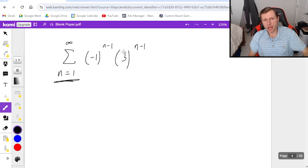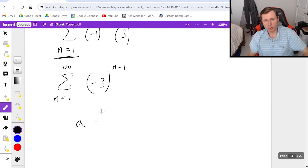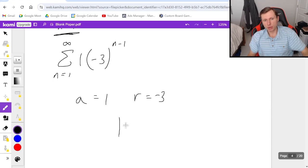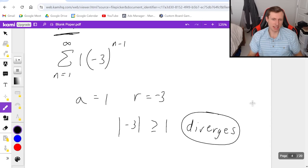This will be negative one times three or negative three to the n minus one power. And now I can say a is the thing in front, which is the invisible one, and r is negative three. The absolute value of r is going to be greater than or equal to one, which means this diverges. And that's all we have to say for that one.